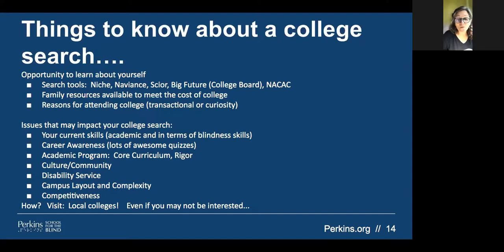Consider your family resources for meeting college costs, as well as your commission for the blind's policy on supporting college. How many credits do you need to receive funding? What GPA do you have to maintain to remain funded? Do they pay for books, provide laptops, and how do they provide training for those laptops?